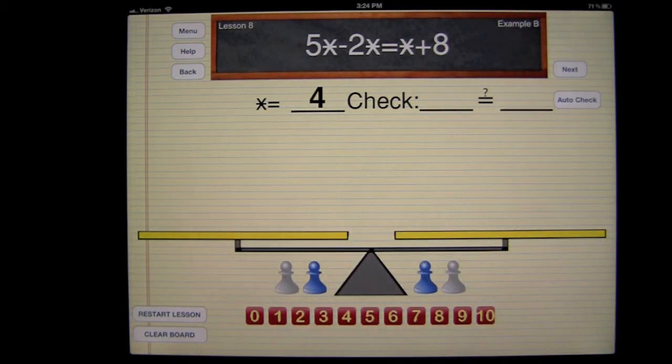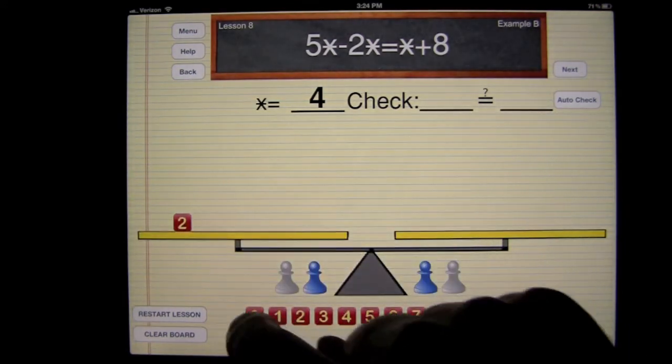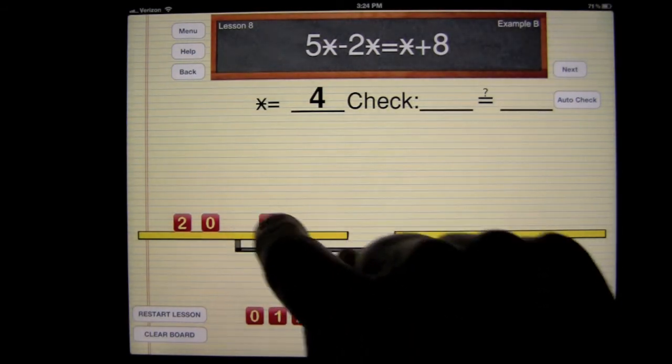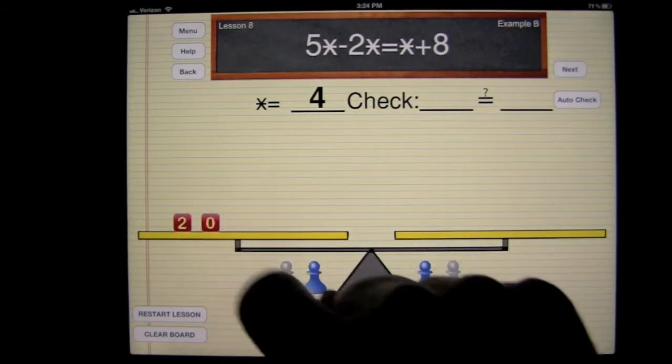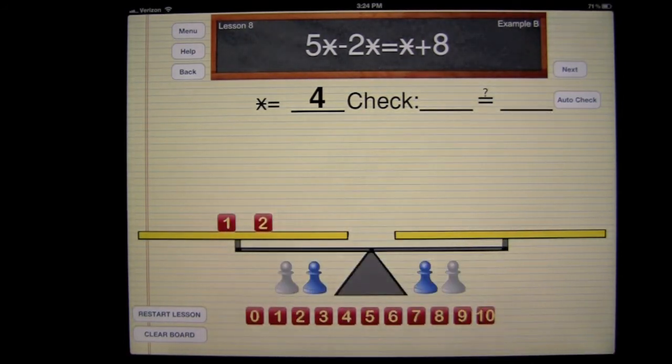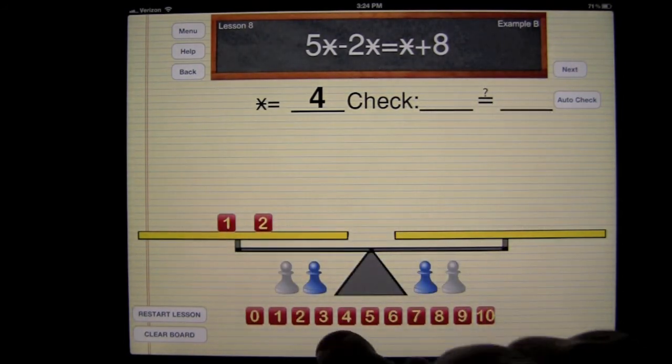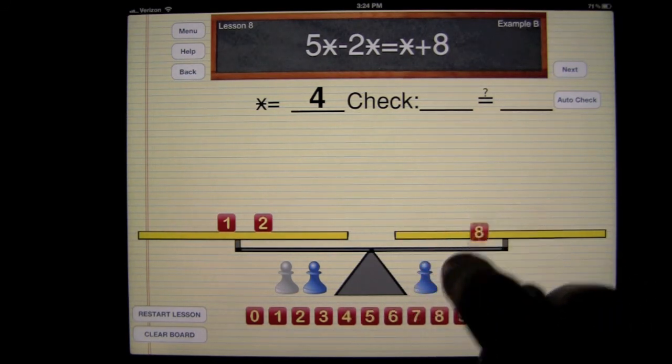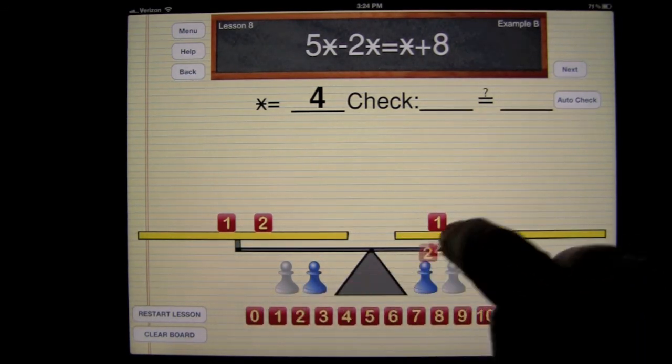And I'll say 5 times 4 is 20, so I can put 20 up here. And I'm going to minus 2 times 4, which is 8. So 20 minus 8 is going to be 12. And I'll drag these away, put up 12. And then I have star plus 8, which is 4 plus 8. We can put the 4 plus 8 just to help us, which we know is 12. And we can go ahead and put that there.